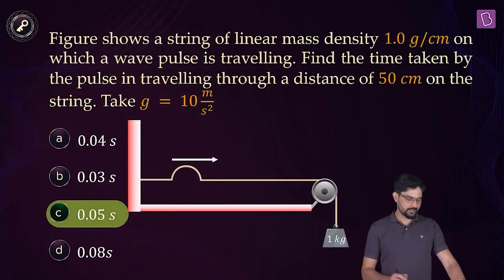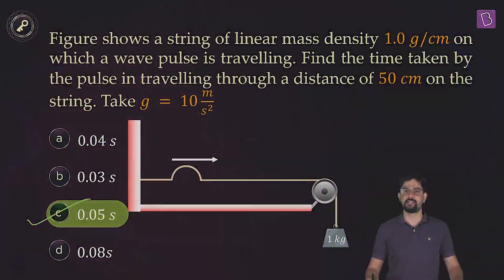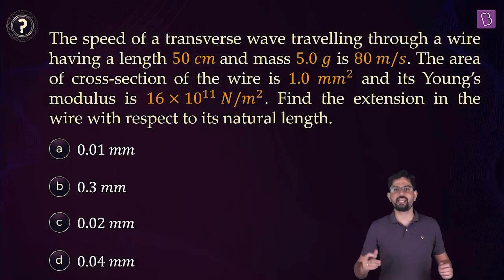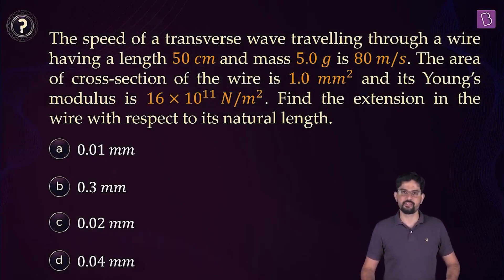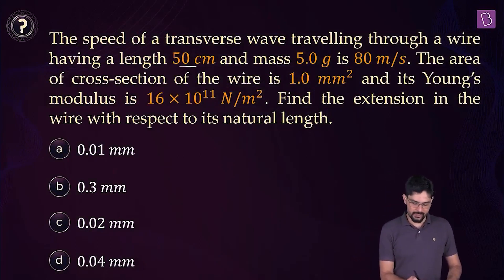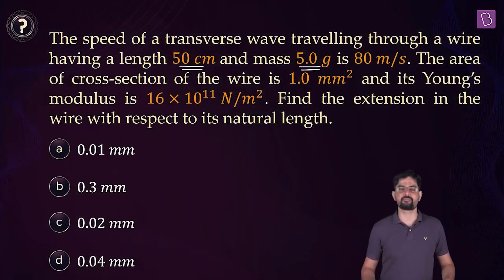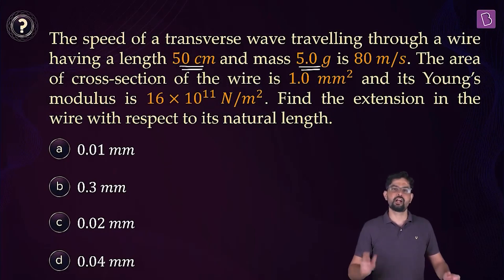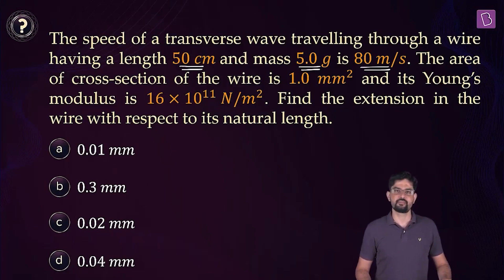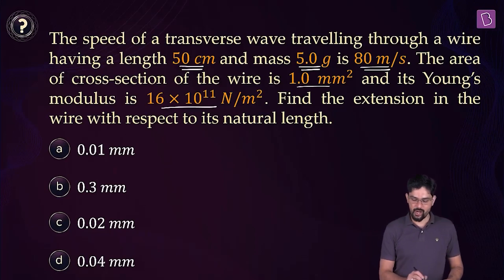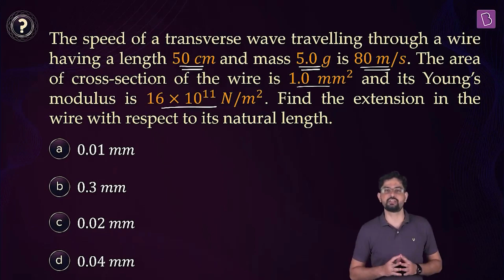So the right answer for this problem is option C. Now in the next problem, a transverse wave is set up on a wire. This wire has a length of 50 centimeters and a mass of 5 grams. The transverse wave is traveling with a speed of 80 meters per second. Given the area and the Young's modulus, you have to find out what is the extension in this wire.